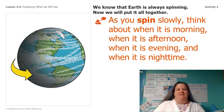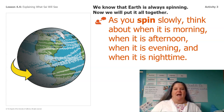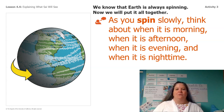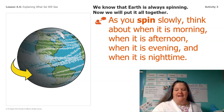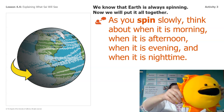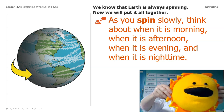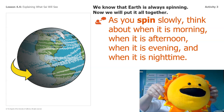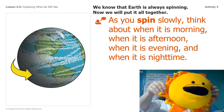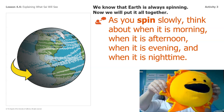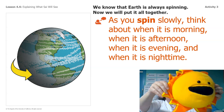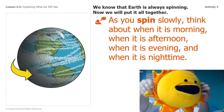Let's put it all together. The earth is always spinning, so as you spin, slowly think about when it's morning, when it's afternoon, when it's evening, and when it's nighttime. Here's the sun — can you guys spin slowly around to show one day? Morning, afternoon, evening, and nighttime.